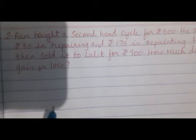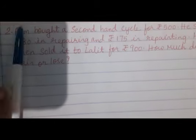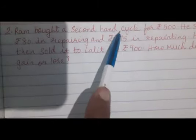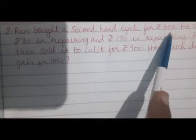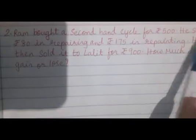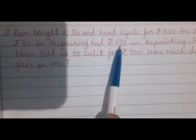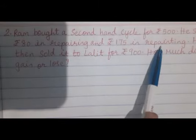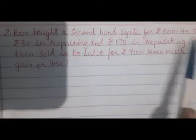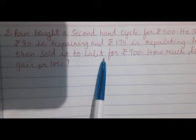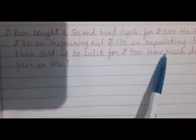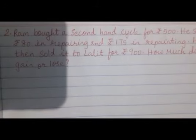Let us proceed to the next sum. Ram brought a second hand cycle for 500 rupees. He spent rupees 80 on repairing and rupees 175 in repainting it. He then sold it to Lalit for rupees 900. How much did he gain or lose?